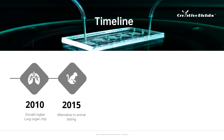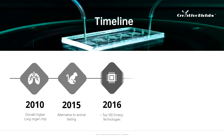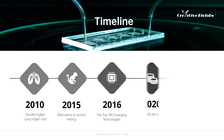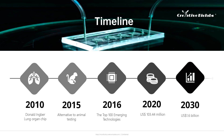In 2015, Nature Magazine published a review stating that organ on a chip is a revolutionary technology that may replace animal testing in the future. In 2016, it was listed as one of the top 10 emerging technologies by the World Economic Forum in Davos. The global organ chip market was worth US$103.44 million in 2020 and is expected to reach US$1.6 billion by 2030, with a compound annual growth rate of 31.1% from 2021 to 2030.